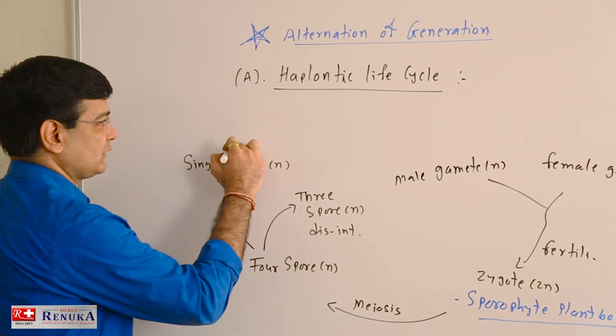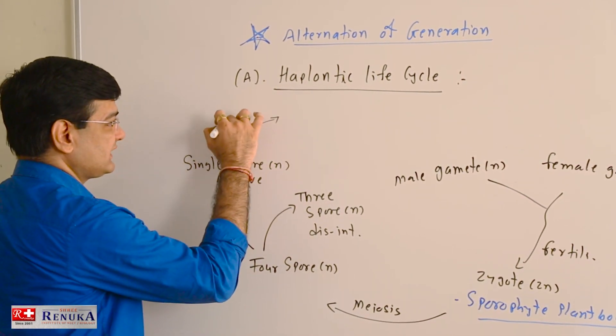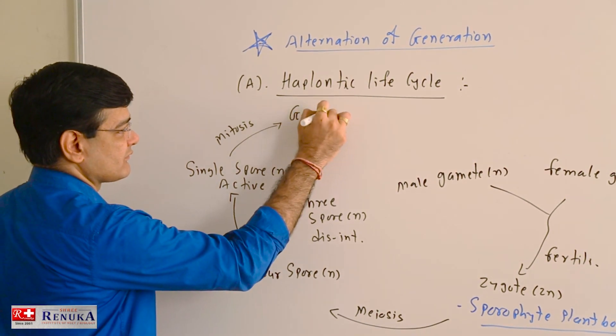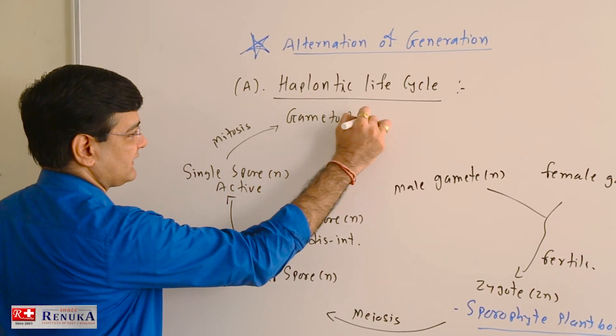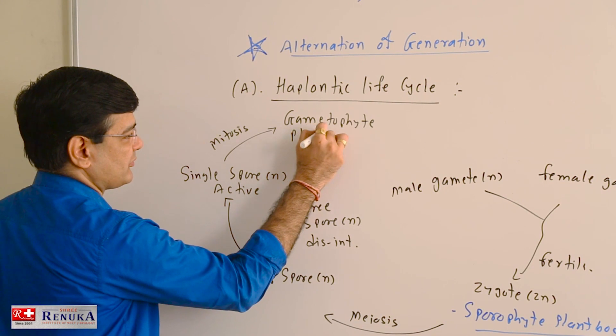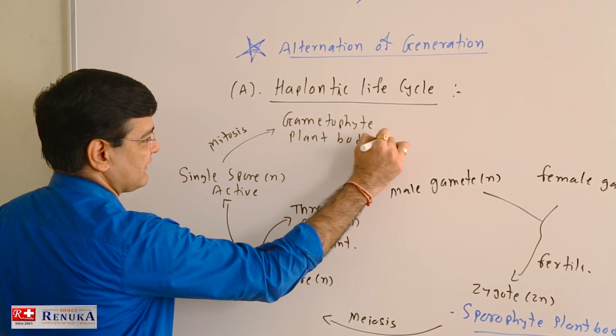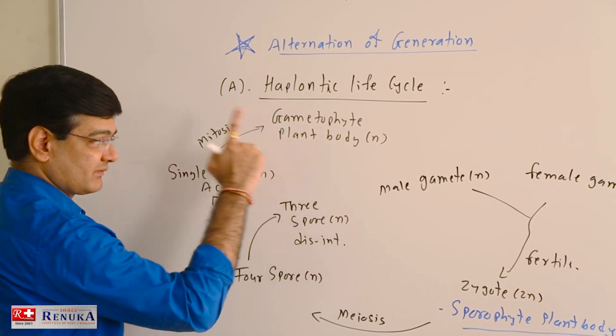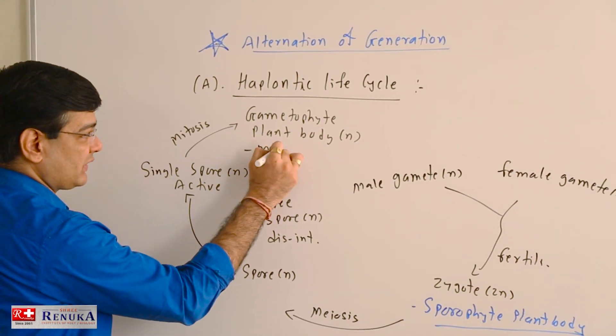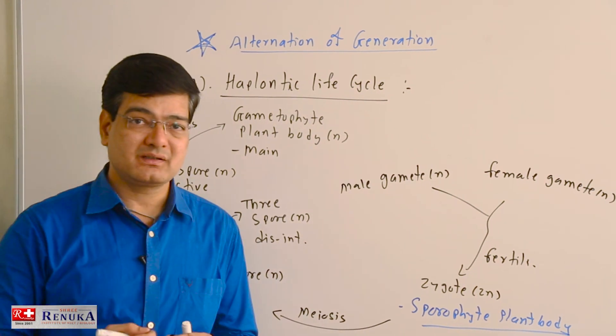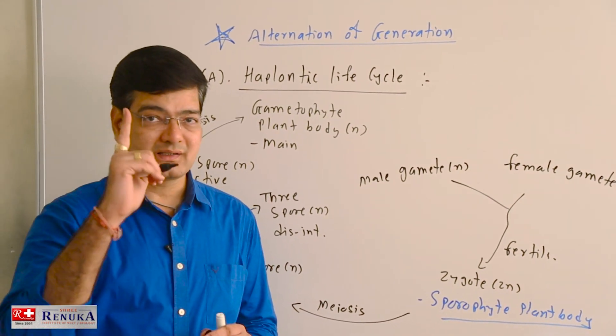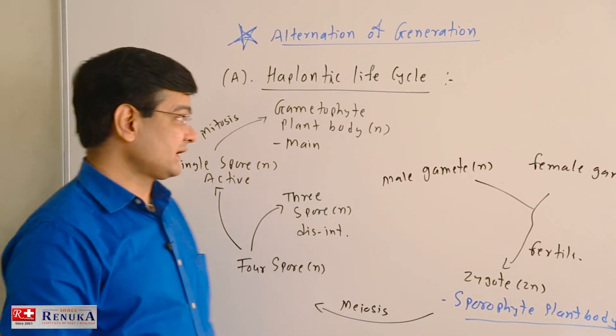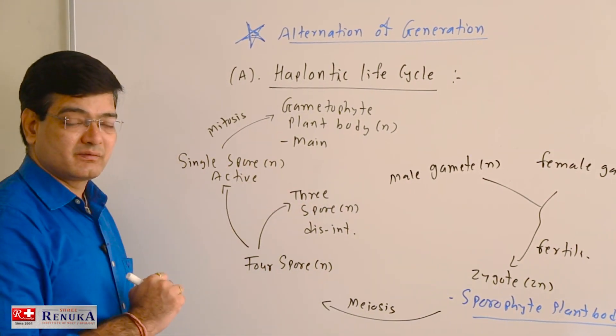This single spore undergoes mitotic division to form gametophytic plant body, and this is haploid. This gametophytic plant body in the case of algae is the main plant body. What do you mean by main? Main means it is long-lived, it has the ability of doing photosynthesis, and simply it is an independent phase.